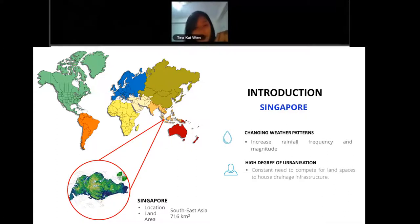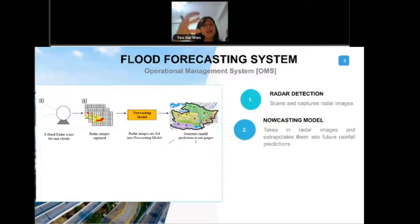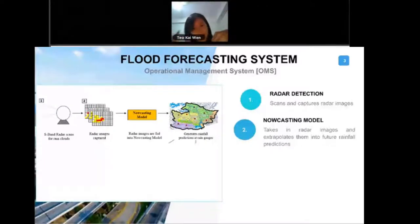Singapore, just like many countries in the world, we grapple with the challenge of changing weather patterns. Over the years, we have been experiencing higher frequency of rainfall and also the magnitude of rainfall. Apart from that, there is also high degree of urbanization. We are constantly competing for land spaces to house our drainage infrastructure. Singapore is actually very small, so we need to put in all the infrastructures, houses and all that. There is always a constant need to compete with all the drainage infrastructures. We recognize that flood forecasting is very important. We need to start to move towards adaptive, non-structural measures as we move on to the future.